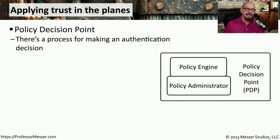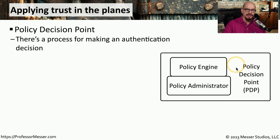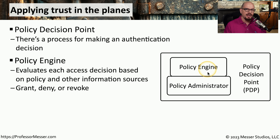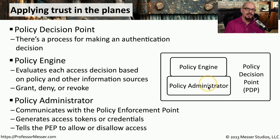The policy enforcement point doesn't make the decision on whether traffic is allowed; instead it gathers information about the traffic and provides it to a policy decision point. The policy decision point examines authentication and decides whether traffic should be allowed on the network. The policy engine looks at all incoming requests, compares them to predefined security policies, and decides whether access is granted, denied, or revoked. The policy administrator then takes that decision and provides it to the policy enforcement point, along with any access tokens or credentials created as a result.